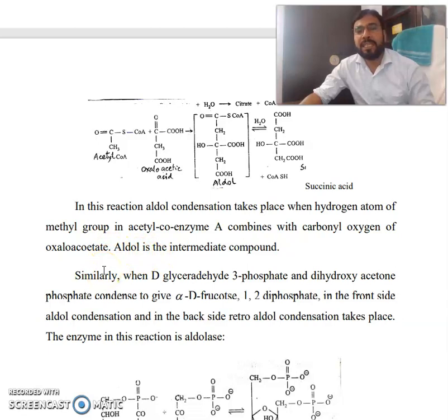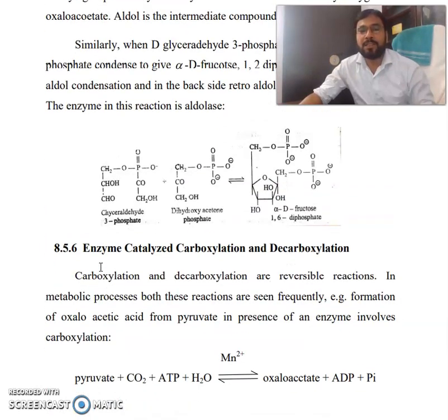Similarly, when D-glyceraldehyde 3-phosphate and dihydroxyacetone phosphate condense to give alpha-D-fructose 1,6-diphosphate, in the front side aldol condensation and in the back side retro-aldol condensation takes place. The enzyme in this reaction is aldolase. Look at this reaction scheme. This is glyceraldehyde 3-phosphate and this is dihydroxyacetone phosphate and this is alpha-D-fructose 1,6-diphosphate.